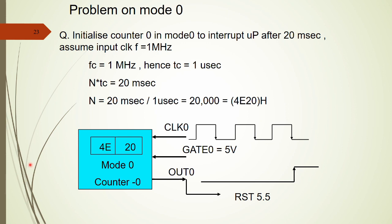Problem example: Initialize counter 0 in mode 0 to interrupt the microprocessor after 20 milliseconds, with input clock frequency f = 1 MHz (Tc = 1 µs). The count value n = 20 ms ÷ 1 µs = 20,000, which is 4E20H in hexadecimal.